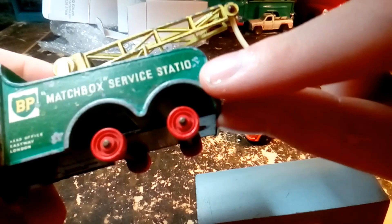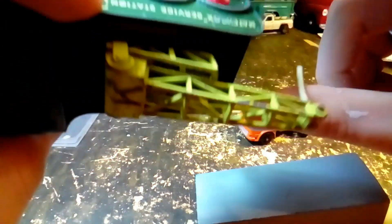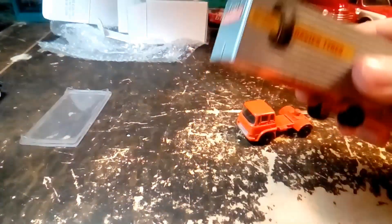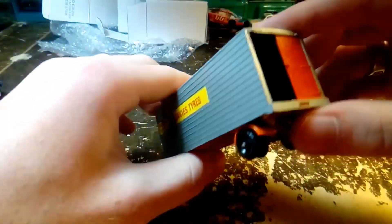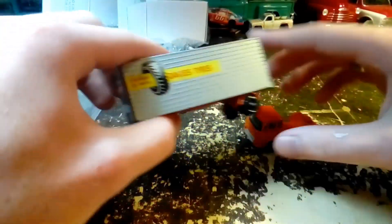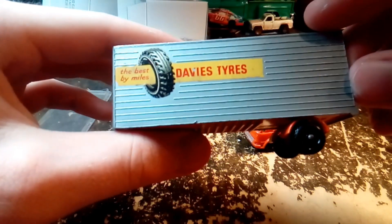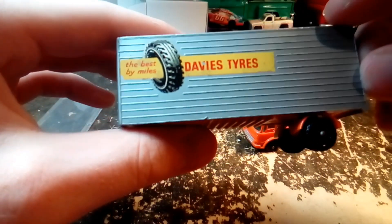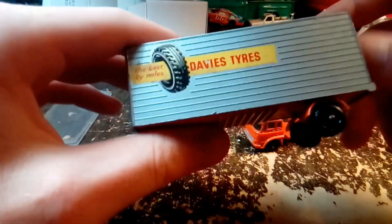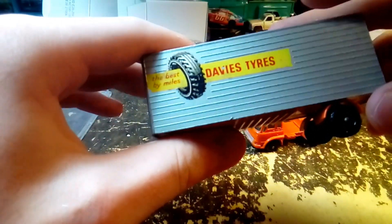So for these decals to still be on there that well is really good. Usually they start coming off like the back end of that truck. So the truck's in good shape. No decals on the truck but the trailer. Best by the miles, Davies Tires. And to us Americans, tires is not spelled right.